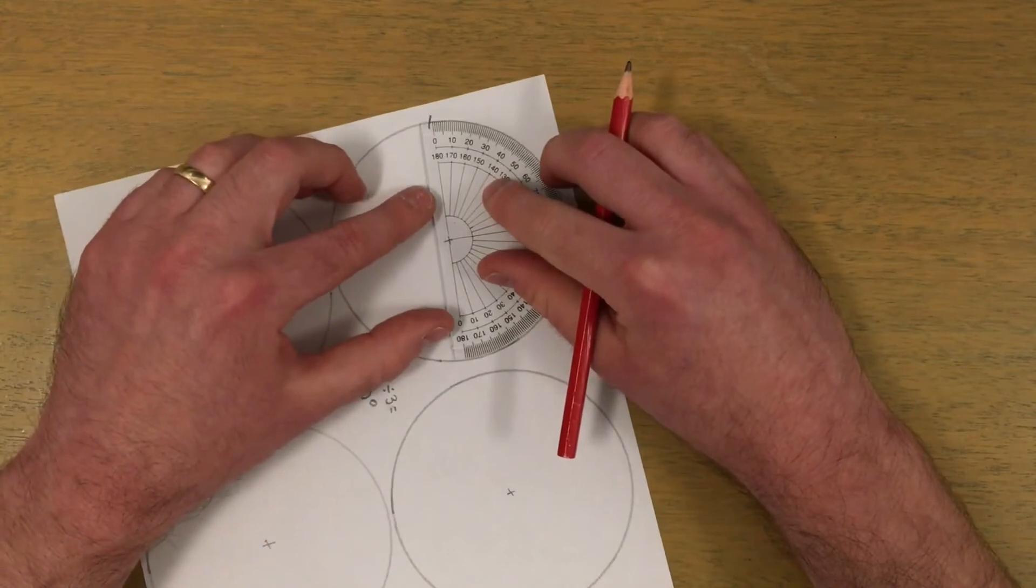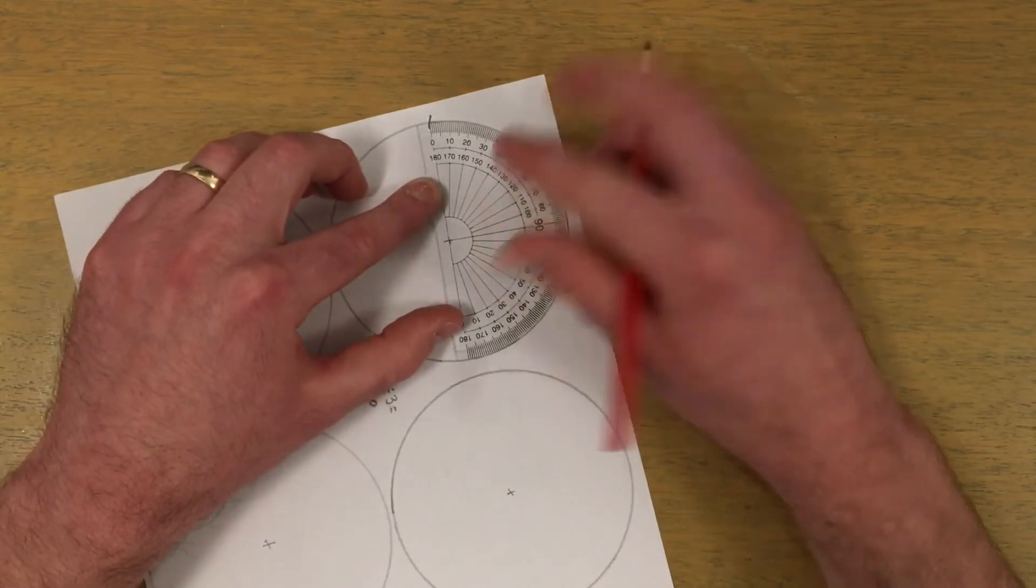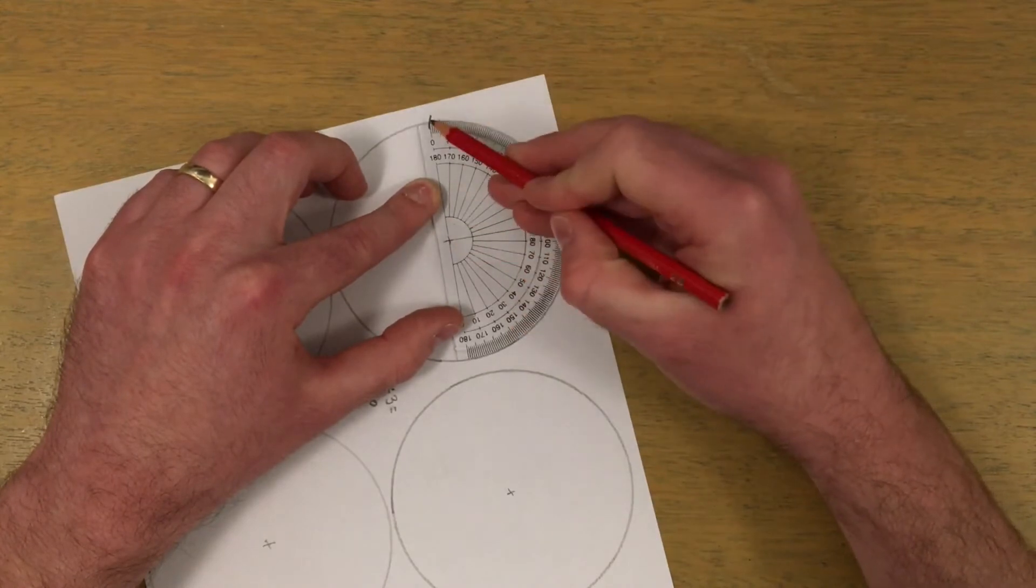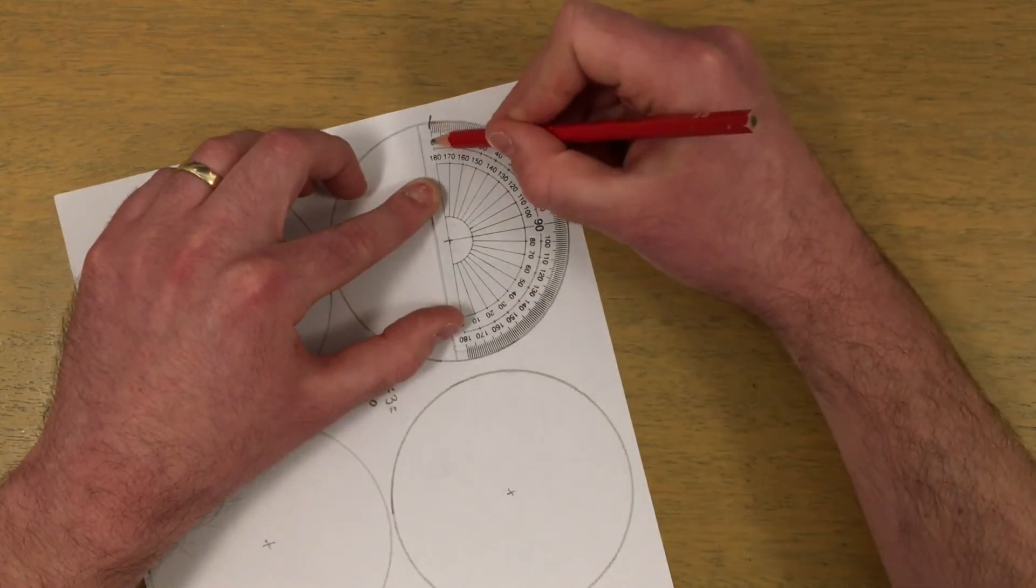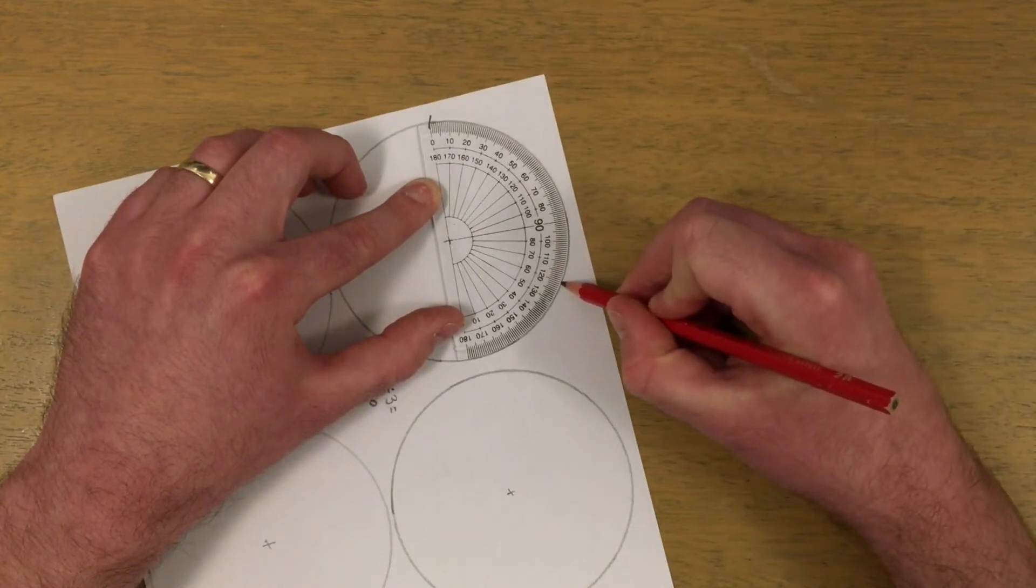Place your protractor with the origin over the centre of the circle and one of the zeros on the first mark. Measure the angle, in this case 120 degrees, to make the second mark.